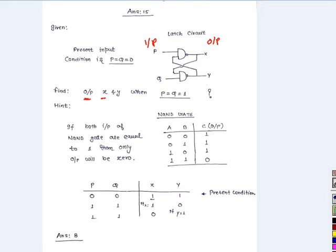The idea is if both inputs of the NAND gate are equal to 1, this particular condition, then the only output will be 0. Otherwise the output will be 1.